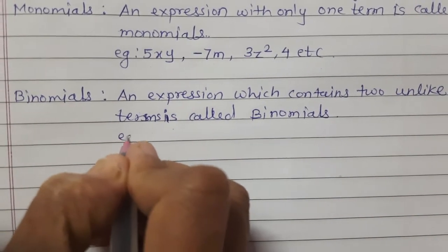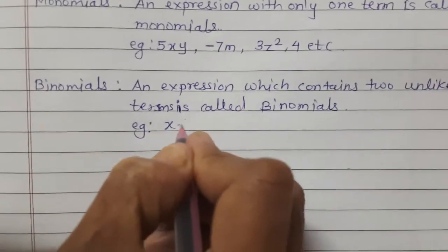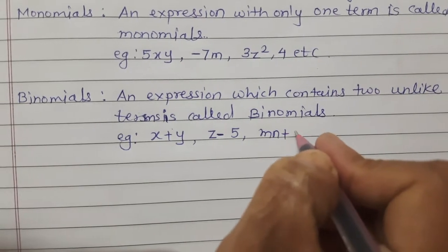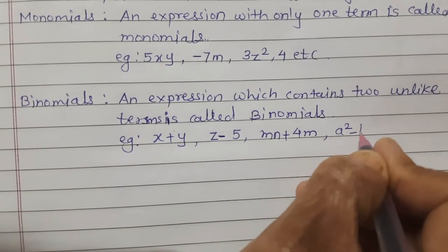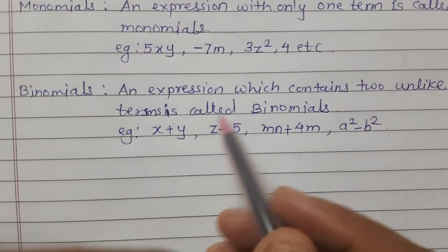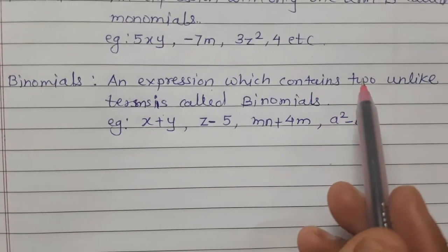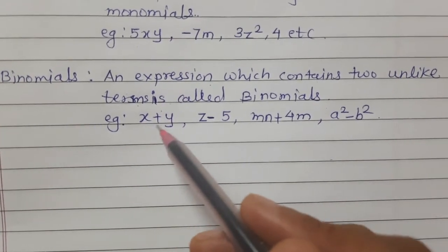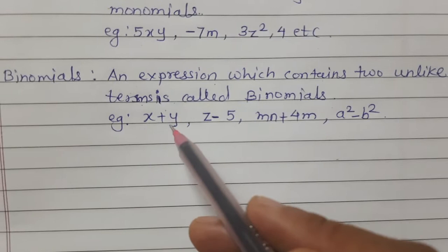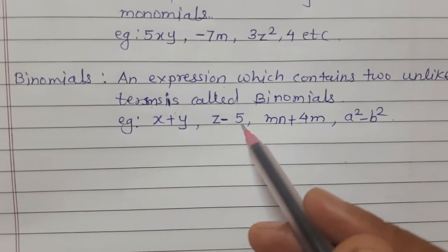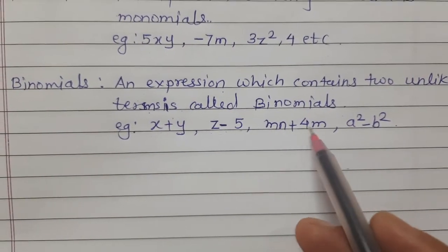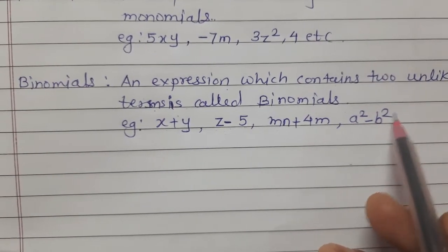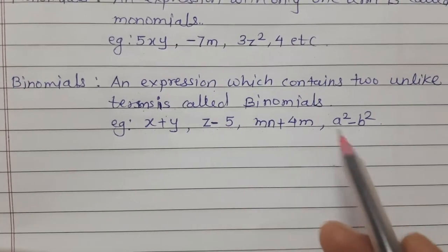Examples of binomial: x plus y, z minus 5, mn plus 4m, a square minus b square. These are examples of binomials because each expression contains two unlike terms.